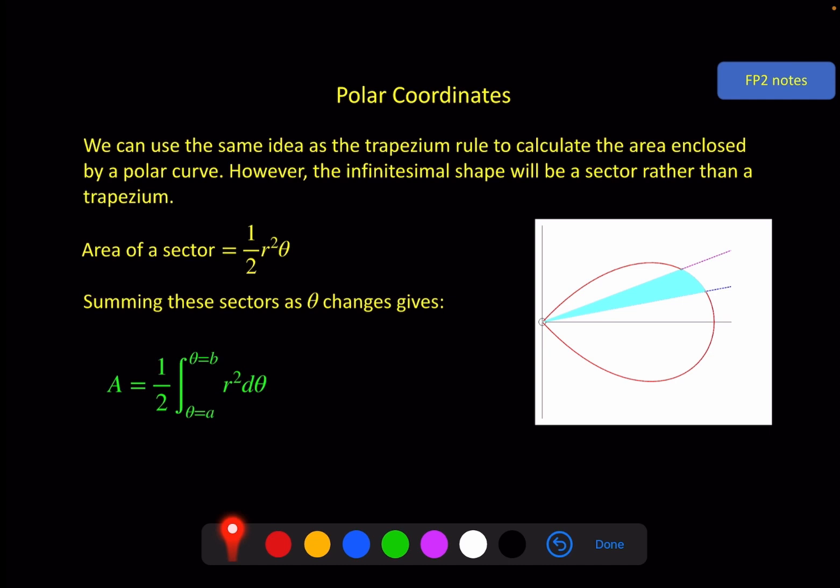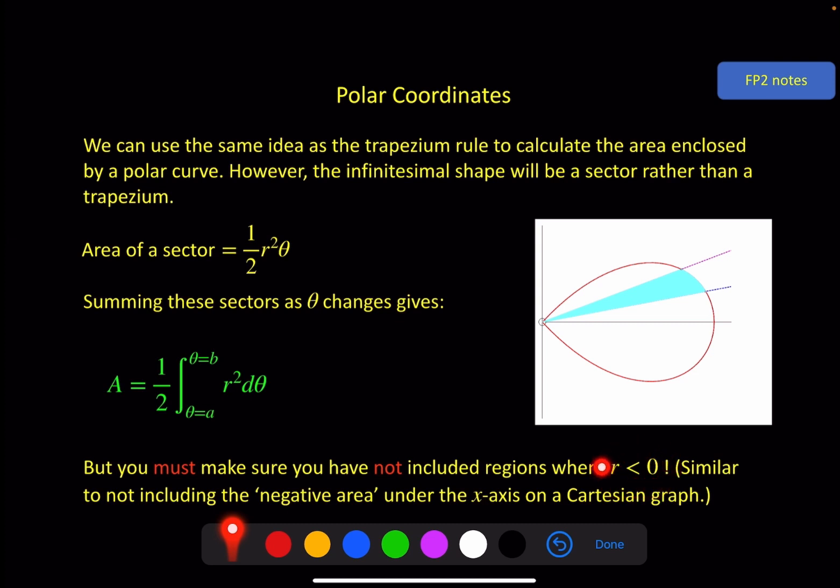A couple of things to note. Here, first of all, you're used to this underneath the x-axis producing what would be a negative area. You have to be very careful with that when you're integrating with respect to x. But that's not the case in polar form. We're going from an angle round to another angle. So we can have area underneath the x-axis because we're not in xy, we're in r θ. So as that goes around, all of this will come out as a nice positive answer. What you do need to be careful of, though, is any sections where r is going to give you a negative answer.